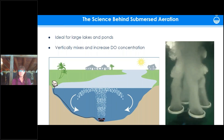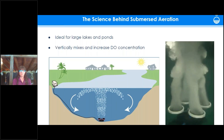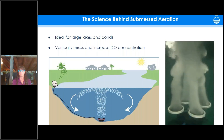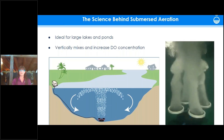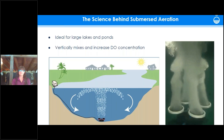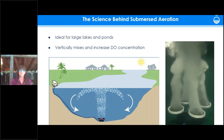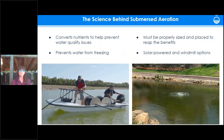Submersed aeration is ideal for large, deep water bodies because it circulates better. An onshore compressor pumps air through subsurface tubing to diffusers on the bottom of the pond. As bubbles rise, they bring poorly oxygenated water up to the surface where it interacts with atmospheric oxygen, and as it sinks back down you get constant circulation and improved dissolved oxygen throughout the water column.